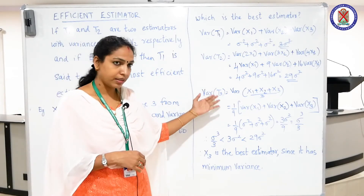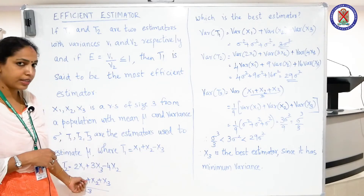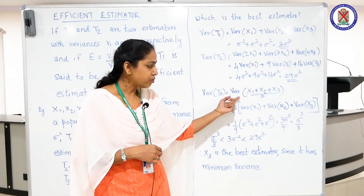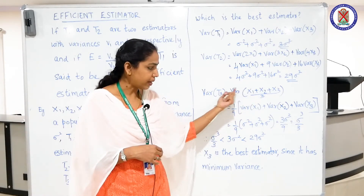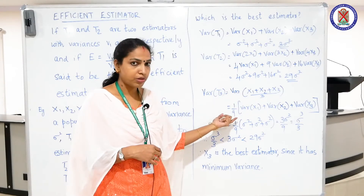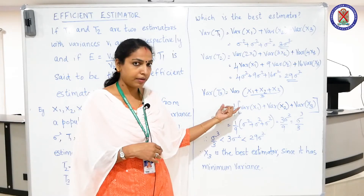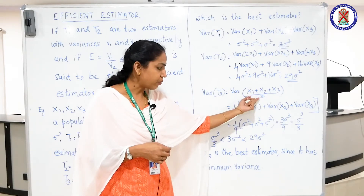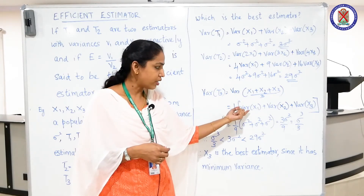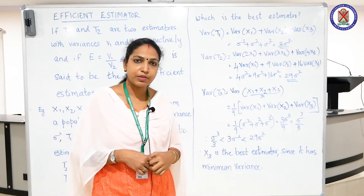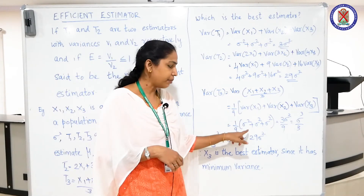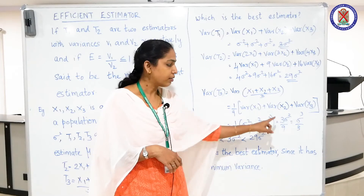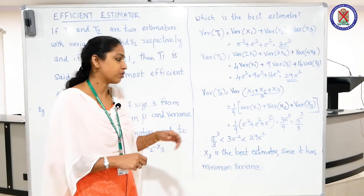Now we find the variance of the third estimator: t3 = (x1 + x2 + x3)/3. We take the constant 1/3 outside — it becomes (1/3) squared = 1/9 — giving Var(t3) = (1/9) * [Var(x1) + Var(x2) + Var(x3)] = (1/9) * [sigma squared + sigma squared + sigma squared] = 3 sigma squared / 9 = sigma squared / 3.